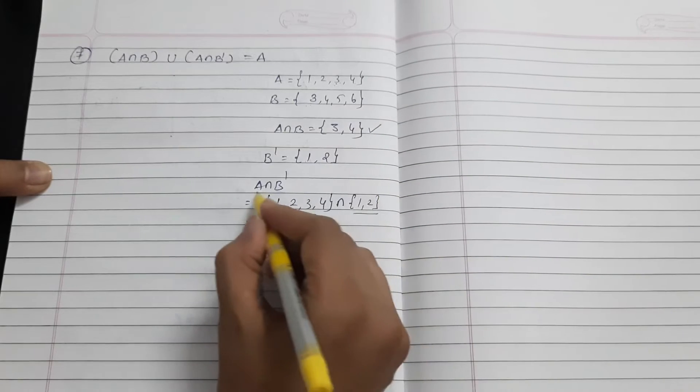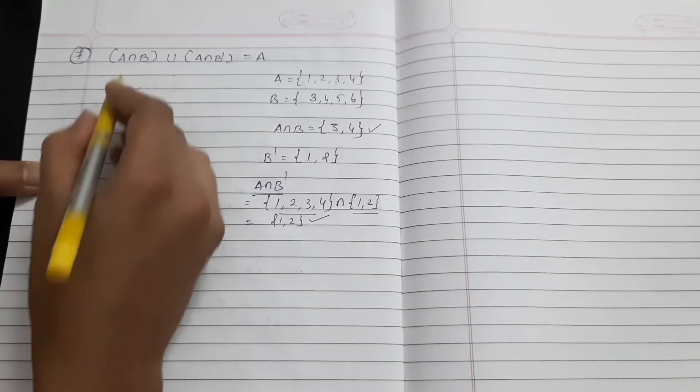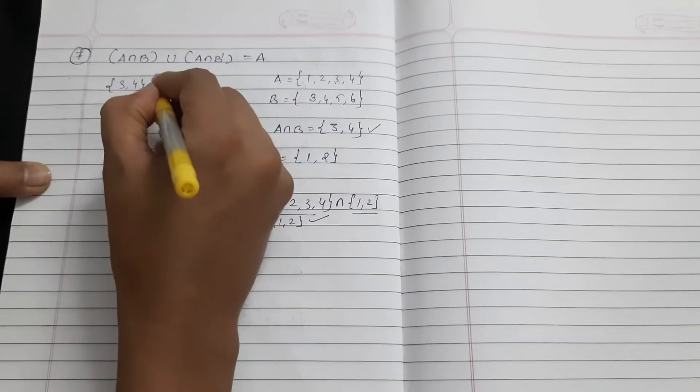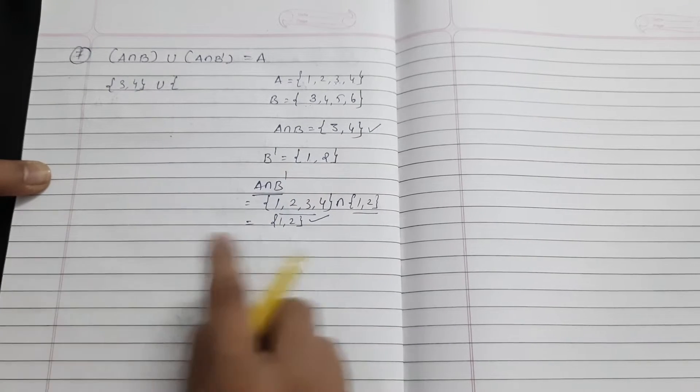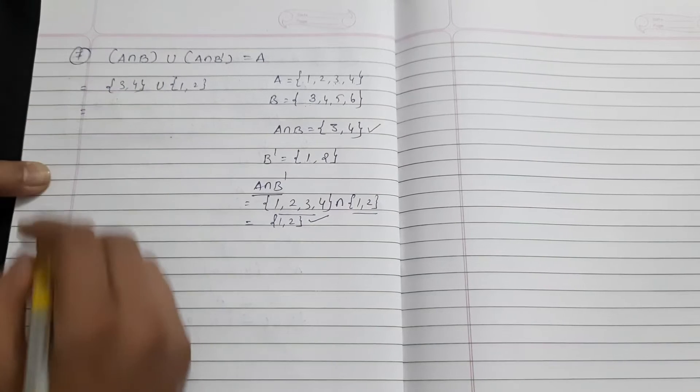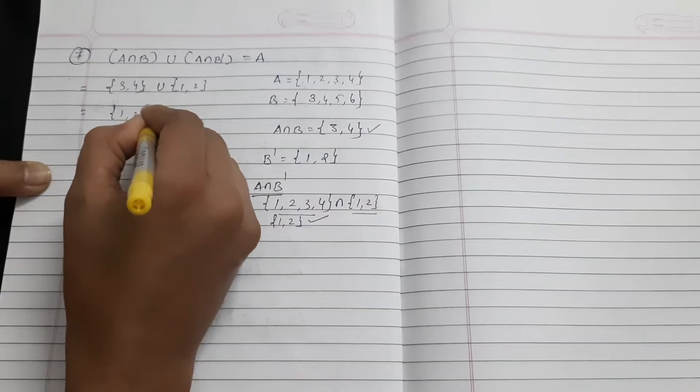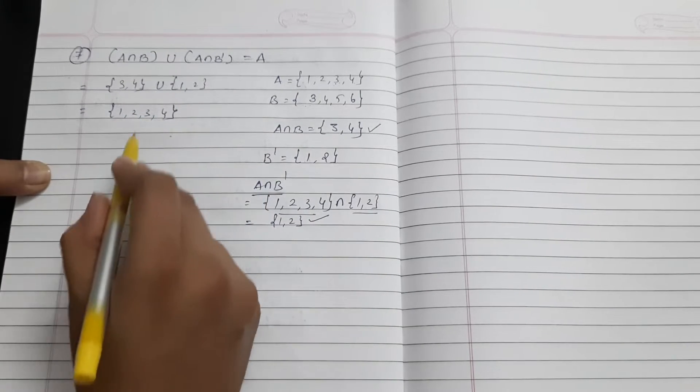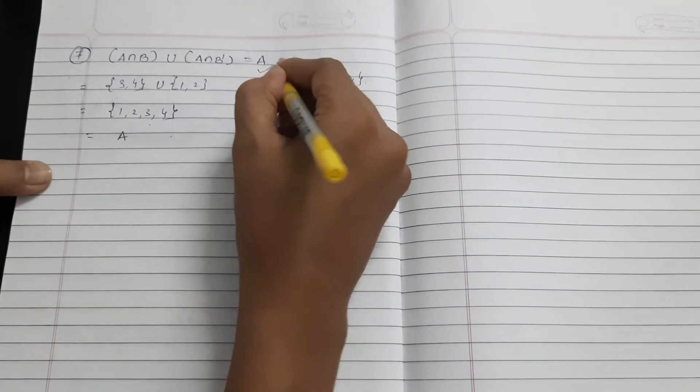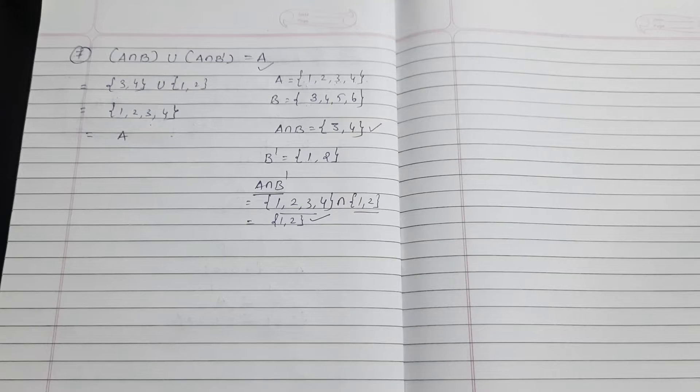Now we have A intersection B and we have A intersection B dash. We need to take union of both. I write A intersection B, that is {3, 4}, union A intersection B dash, that is {1, 2}. Taking union of both: {1, 2, 3, 4}. This is actually our set A. It is equal to A. Hence proved.